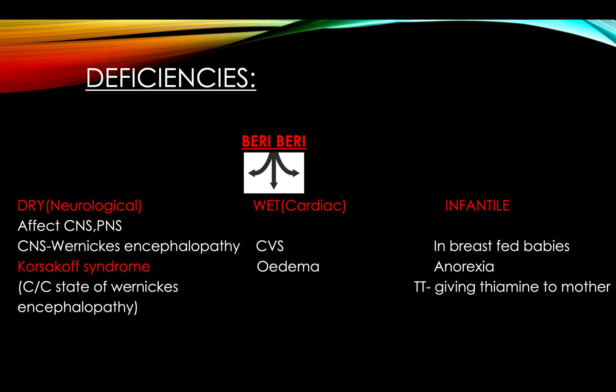Deficiency of thiamine produces beriberi, which is mainly of three types: dry beriberi (neurological), wet beriberi (cardiac), and infantile beriberi. Dry beriberi mainly affects the CNS and PNS — in the CNS it produces Wernicke's encephalopathy. The chronic state of Wernicke's encephalopathy is known as Korsakoff syndrome. Wet beriberi mainly affects the cardiovascular system, with symptoms including edema. Infantile beriberi is mainly seen in breastfed babies, with symptoms of anorexia; treatment involves giving thiamine to the mother.